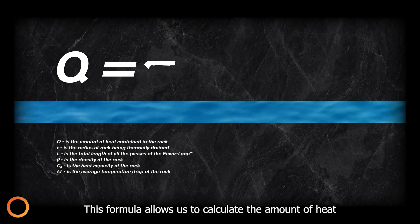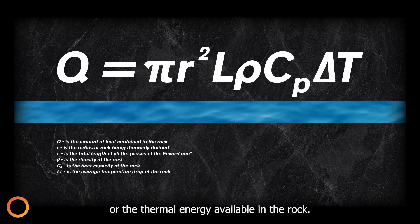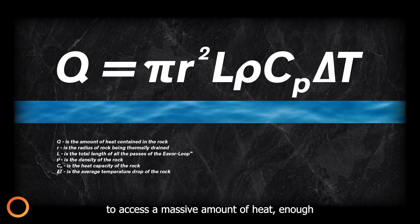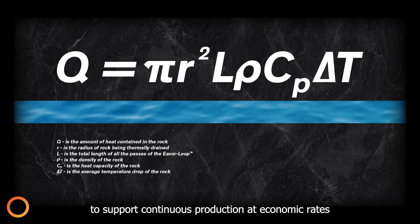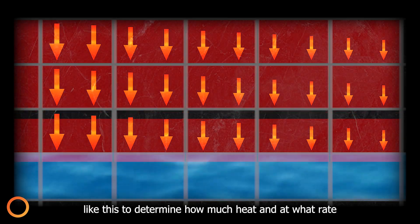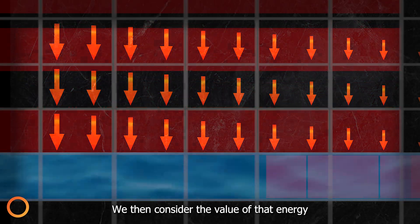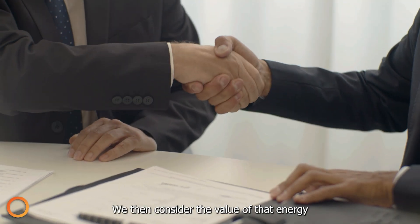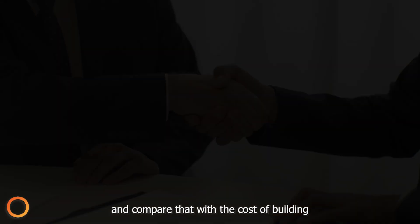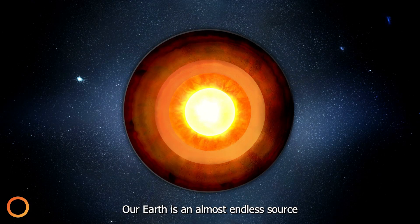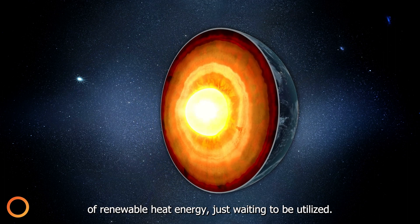This formula allows us to calculate the amount of heat or the thermal energy available in the rock. The large scale of the Everloop allows it to access a massive amount of heat, enough to support continuous production at economic rates for over 30 years. Ever's engineers use formulas like this to determine how much heat and at what rate we can produce from a given Everloop. We then consider the value of that energy in the marketplace where the Everloop resides and compare that with the cost of building the Everloop to determine the overall economic return.